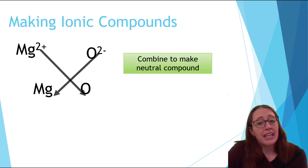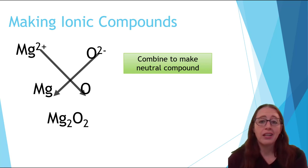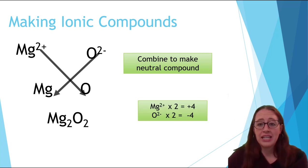Here's an example where blindly following the crisscross trick can get you into trouble. Ionic compounds always need to be the lowest whole number ratio. Be sure to note that this is not true for covalently bonded compounds. Now if we follow the trick like in the previous slide, we're going to get Mg2O2. This does give us a neutral species. It's not the lowest whole number ratio, so we need to reduce that down to MgO.